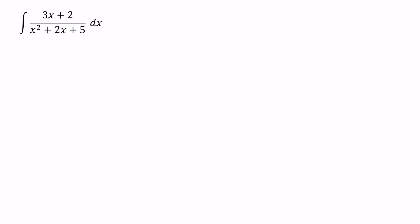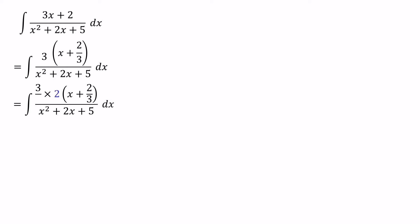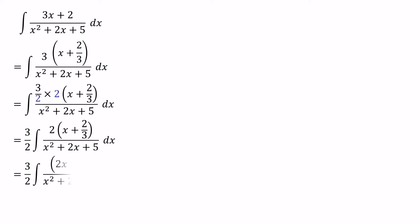First we need to get the differentiation of the denominator from the numerator. In the numerator we have 3x plus 2. We can get 3 as a common factor, giving us within the bracket x plus 2 over 3. Then we can put a 2 value in the numerator, and to cancel out this 2 we put another 2 in the denominator. Then the 3 over 2 value can be taken outside of the integral as it is a constant. We remove the bracket and get 2x plus 4 over 3 in the numerator.